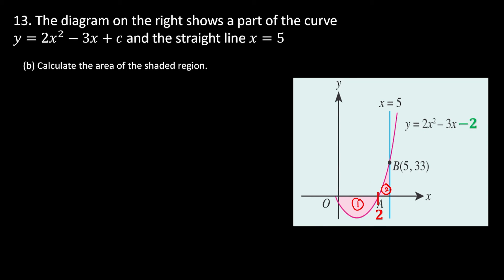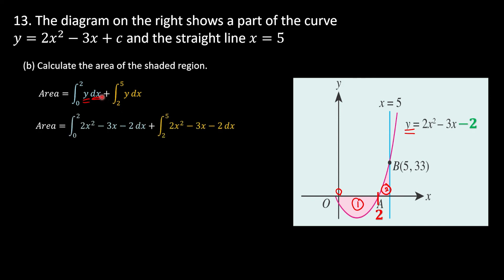We split into two parts: 0 to 2, and 2 to 3. Since bounded by the x-axis, we use dx with y as the integrand. We replace y with the curve equation y = 2x² - 3x - 2 and substitute into the integral.